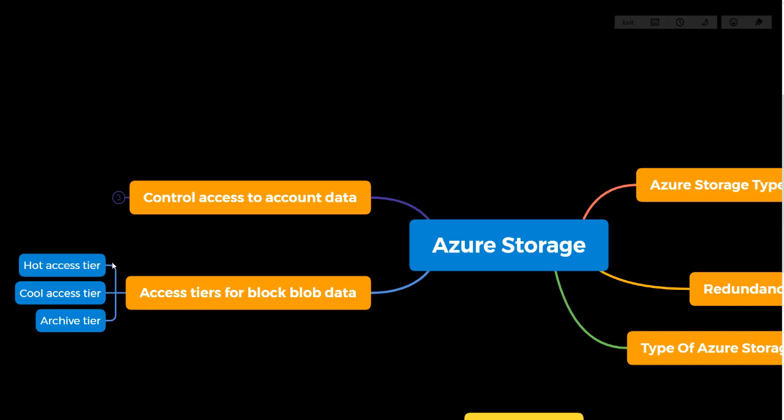The second tier is Cool (Cold) storage — use this when you want to store backup data or any data that is not accessed frequently or randomly. Using the cool tier helps optimize cost. The third is Archive — you can set lifecycle policies so that after a certain number of days (e.g., 10 or 50 days), data such as application logs is automatically archived. Archive is less costly compared to the hot access tier, so it further optimizes cost.